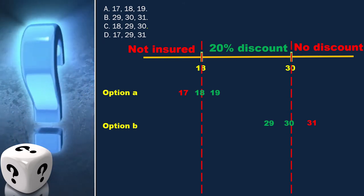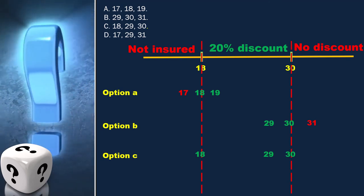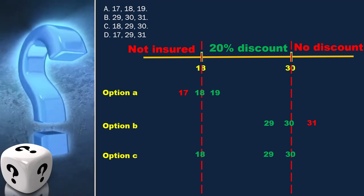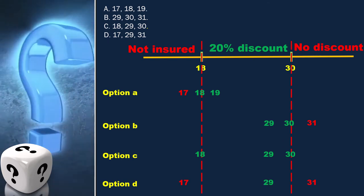Option C is 18, 29, 30. Option D is 17, 29, 31.